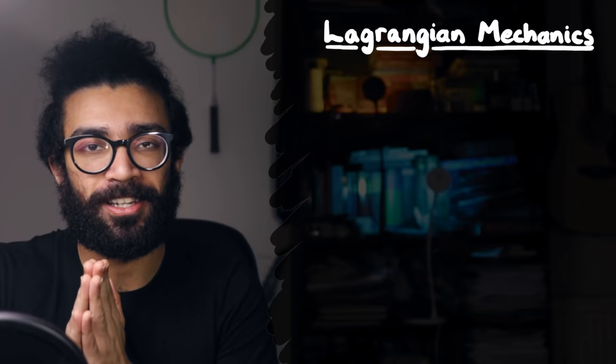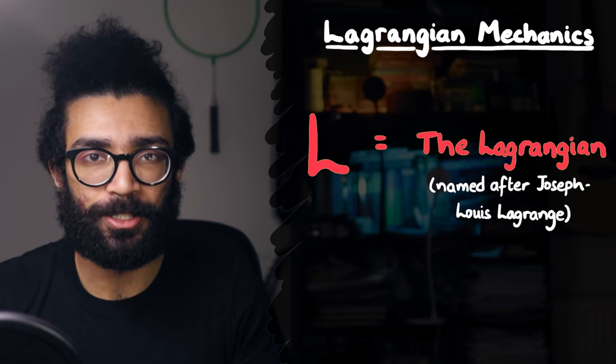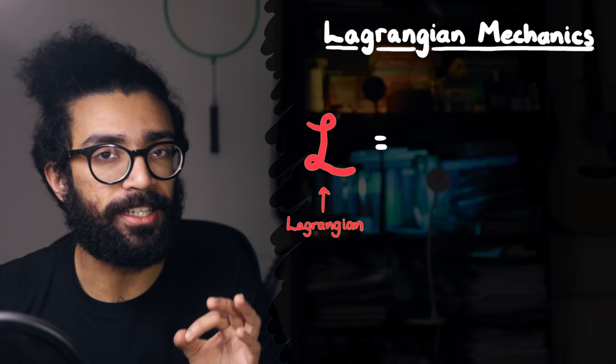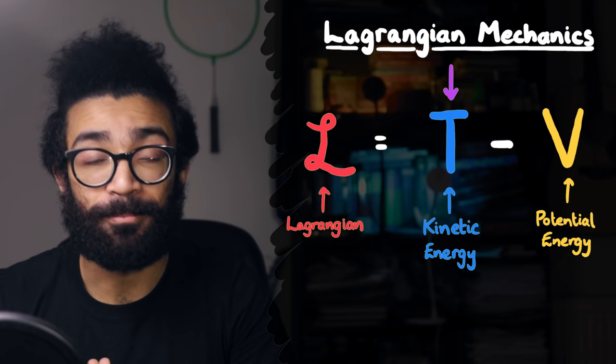Now Lagrangian mechanics revolves around one central quantity known as the Lagrangian. Named after Joseph-Louis Lagrange, it is denoted with the capital letter L, although sometimes when handwritten we'll use a squiggly curly L rather than a normal uppercase L. In this quantity the Lagrangian is defined as the kinetic energy of the system that we happen to be studying minus the potential energy of that system. In this case kinetic energy is represented by capital T and potential energy by capital V.